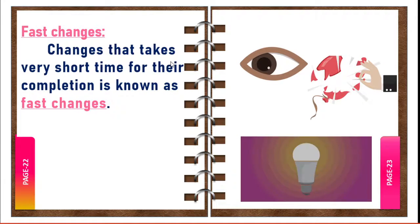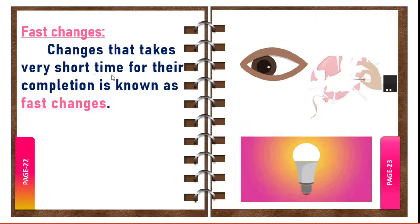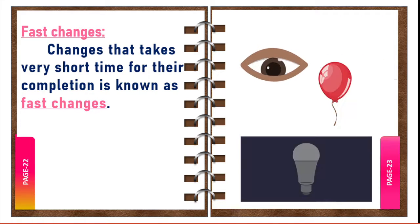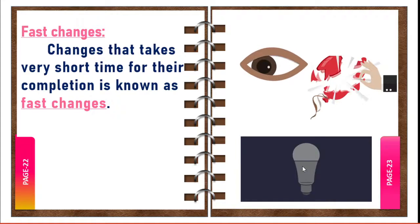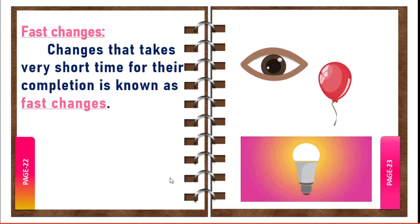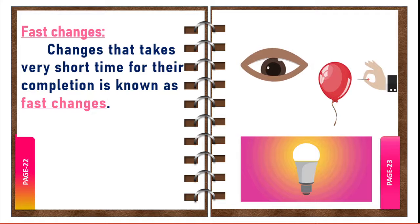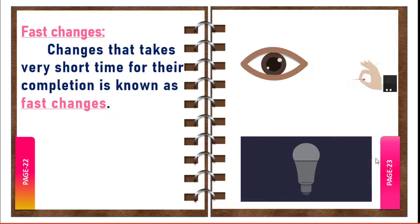Fast changes: changes that take a very short time for their completion are known as fast changes. These changes take place within a few seconds or few minutes. For example, sneezing, burning of a match stick, bursting of crackers, explosions, lighting of an electric bulb, and bursting of an inflated balloon are examples of fast changes.